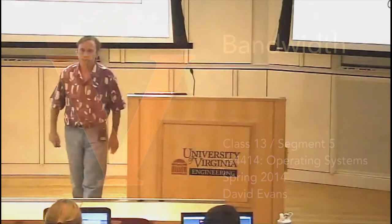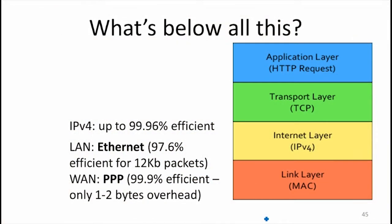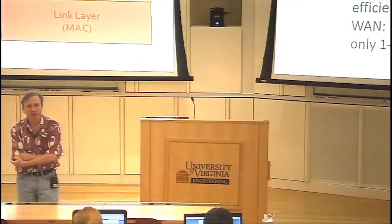What's below all this? Is the link layer really the bottom? When our packets are going from LA to Sydney on their way to Busselton or to Hong Kong, how are they traveling? How do the packets get across the ocean?